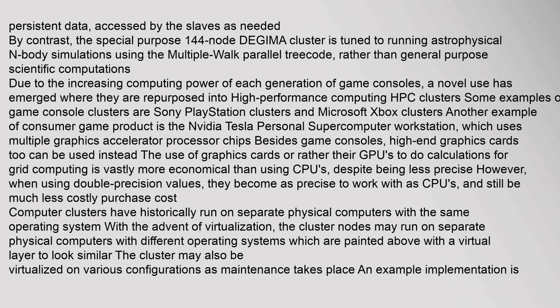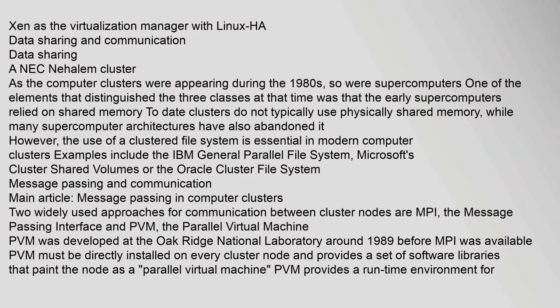The use of graphics cards — or rather their GPUs — to do calculations for grid computing is vastly more economical than using CPUs, despite being less precise. However, when using double-precision values, GPUs become as precise as CPUs while still being much less costly. Computer clusters have historically run on separate physical computers with the same operating system. With the advent of virtualization, cluster nodes may run on separate physical computers with different operating systems painted with a virtual layer to look similar. An example implementation is XEN as the virtualization manager with Linux HA.